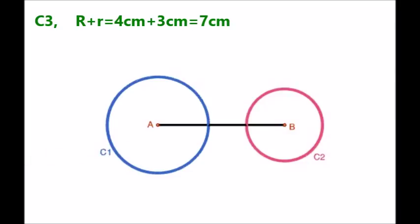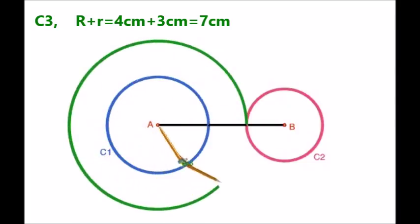Dear students, here we are constructing transverse common tangent, so the given radii must be added. Therefore, 4 cm plus 3 cm equals 7 cm. With radius equal to 7 cm and center A, draw a circle. Let it be circle C3.